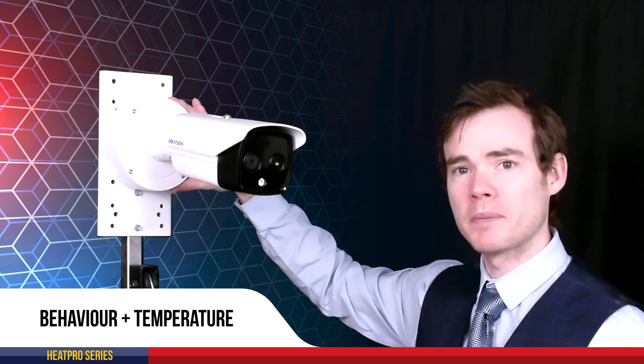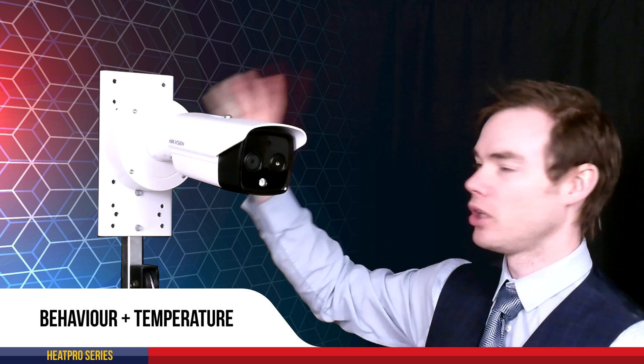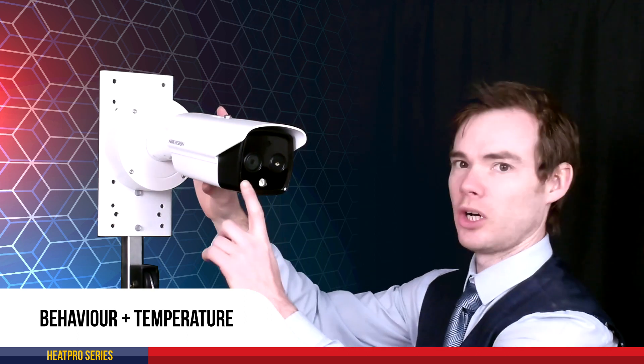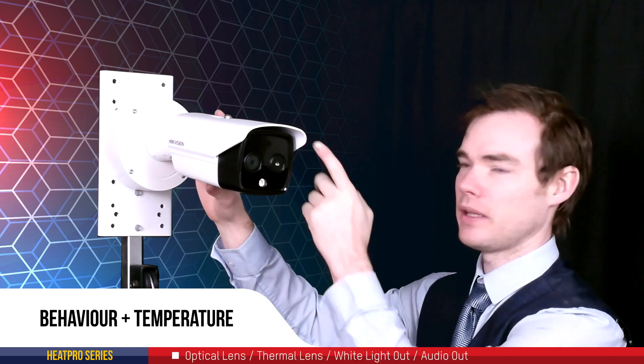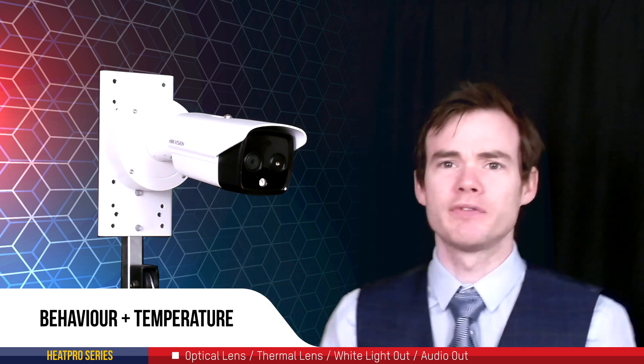You simply fit the bracket to the wall, put your back box on there and then fit the camera to that one. As I mentioned, this one has an optical and a thermal lens as well as the white light out and the audio. Now this has an array of different features.